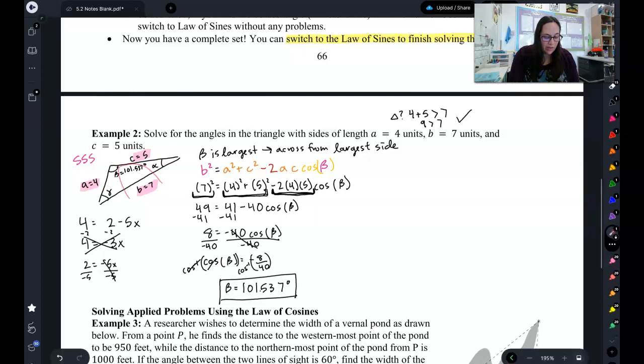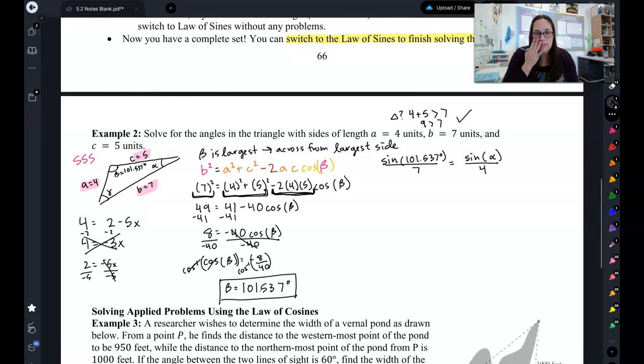So, at this point, we have a complete pair. You can switch over to the law of sines now. Now, remember, you don't have to. You can continue solving with the law of cosines. It's just a kind of a long process to solve for an angle with the law of cosines. Solving for an angle with law of sines is a lot faster. So, I switch over and at this point, I can solve for alpha or gamma. It really doesn't matter. So, let's go ahead and solve for alpha together. So, we get my complete set equals sine of alpha over 4. And you should know how to solve this at this point. So, pause the video, work through solving for alpha on your own. Then, use your 180 rule to solve for gamma.